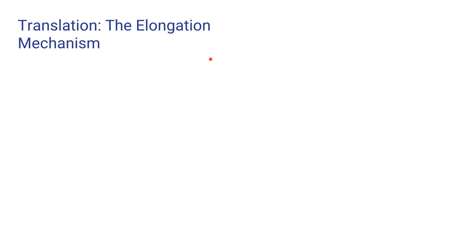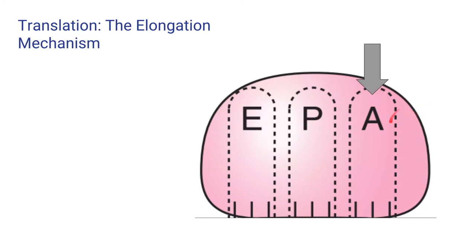In ribosomes, there are three different sites present. The A site is the site to which new aminoacyl-tRNAs, except the first one, bind to.